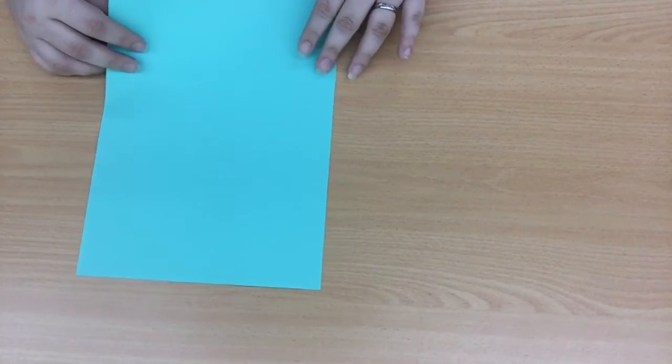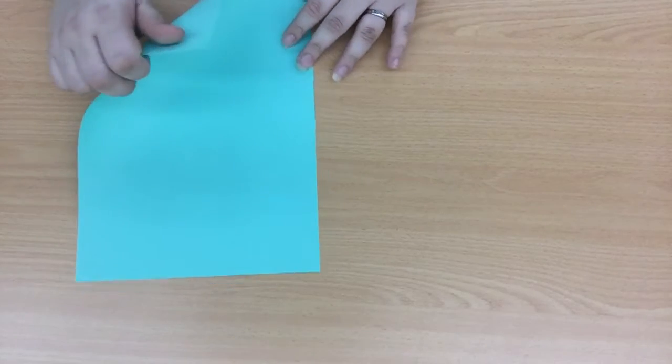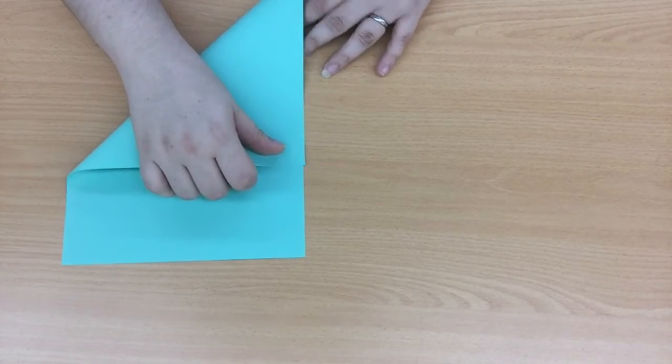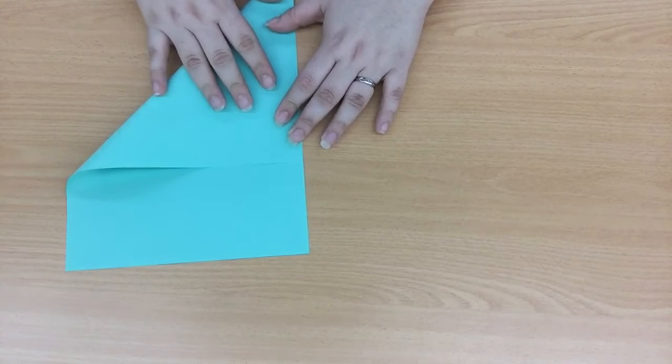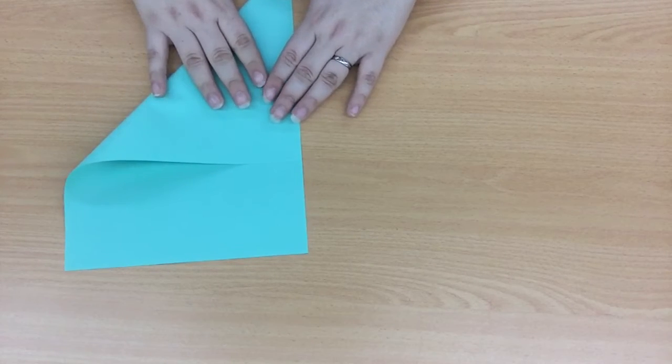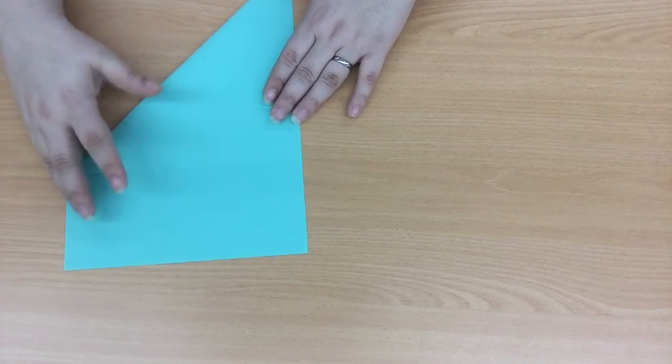To begin with we'll need whatever color you're using as your bouquet. I'm taking green and we'll start by folding it into a triangle. This is going to allow us to make a square.